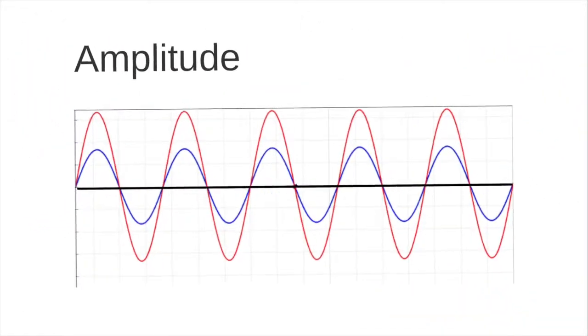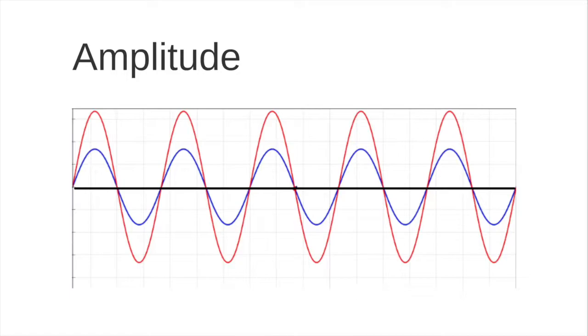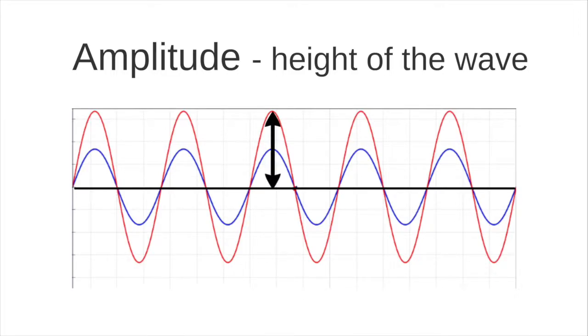Another aspect of waves that should be mentioned is called amplitude. Amplitude measures the height of the wave. In this diagram, the red wave has a greater amplitude than the blue wave. Amplitude is measured from the centerline to the wave peak.